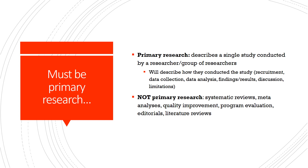That sounds straightforward, but there are other types of research out there — not-so-primary research. Some examples include systematic reviews, meta-analyses, quality improvement projects, program evaluation, editorials, and literature reviews. All of these are scholarly and examples of high-quality work published in peer-reviewed journals, but these are not telling you the story of a specific study that was conducted.